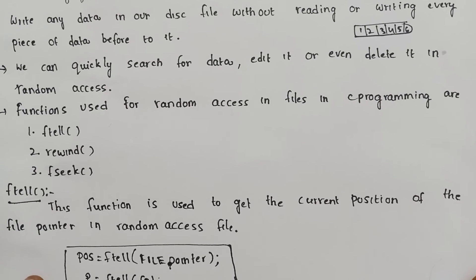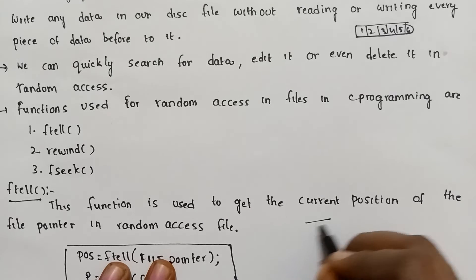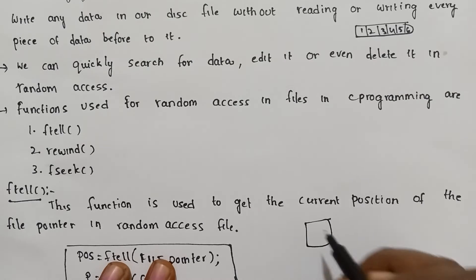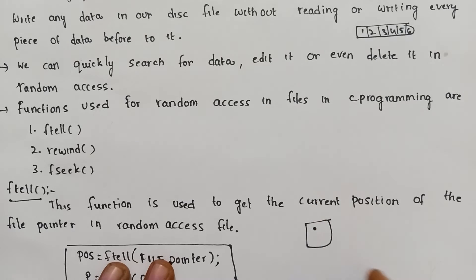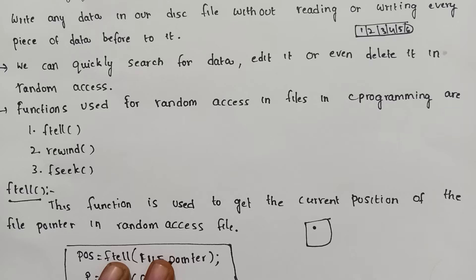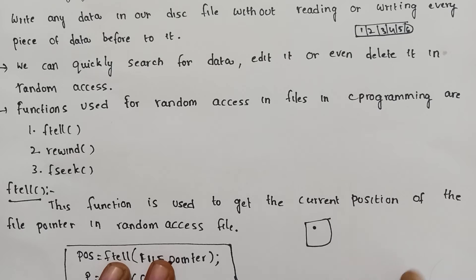The ftell function is used to get the current position of the file pointer in a random access file. Here we have a file, and this file has a file pointer. The position can be the beginning, middle, or end. The current position of the file pointer is obtained, and we apply an operation to that current position using ftell.